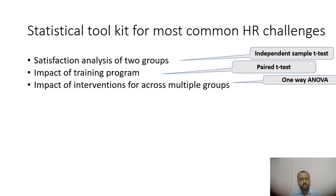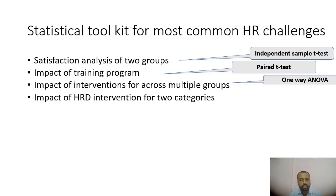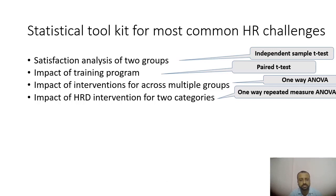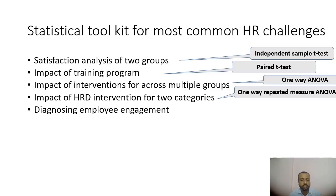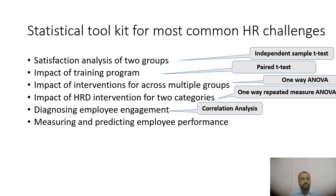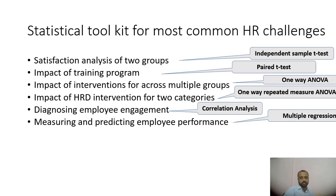If you have some intervention and want to measure its value for two categories or time points, the answer is one-way repeated measures ANOVA, which is easily available in SPSS. Similarly, if you have a problem of diagnosing employee engagement with different factors, you may use simple correlation analysis to find the association between different variables or components of employee engagement. You may also use regression to measure and predict employee performance, where performance is the dependent variable and three, four, or five independent variables are compared using beta and standardized values.